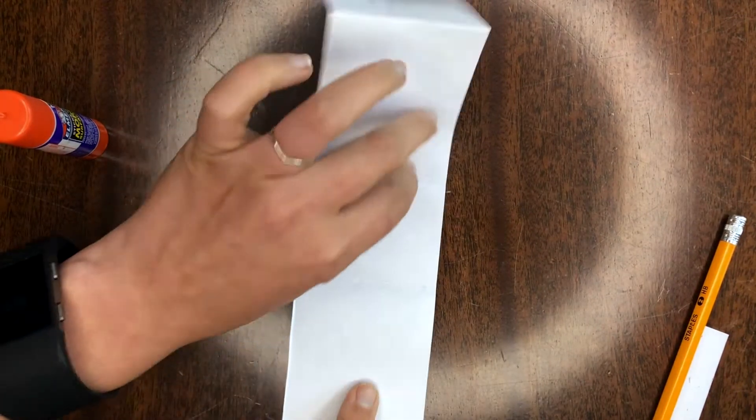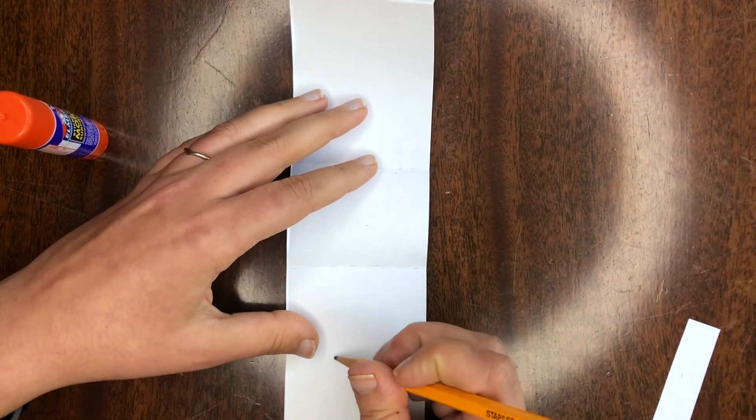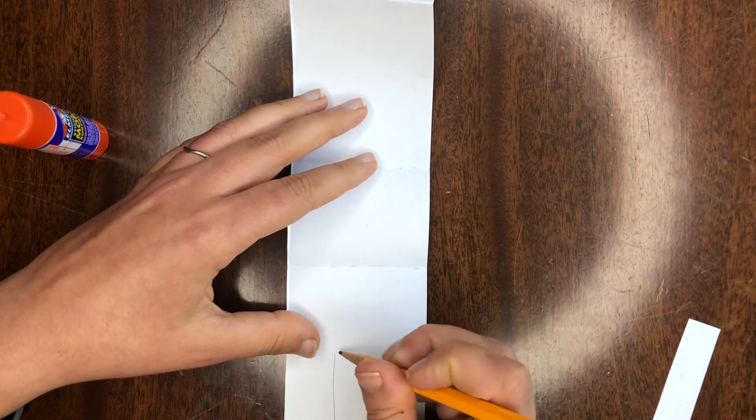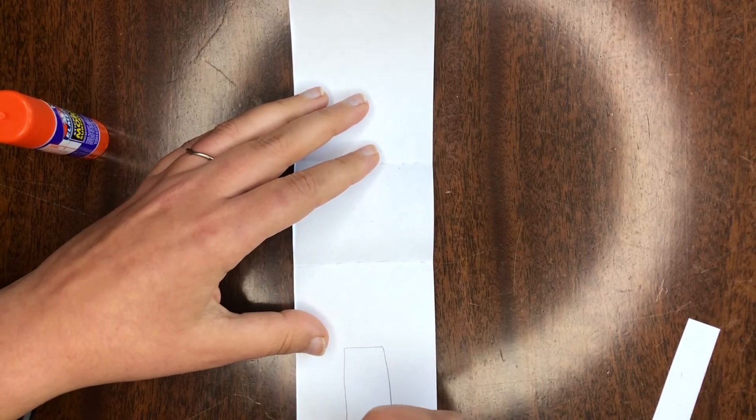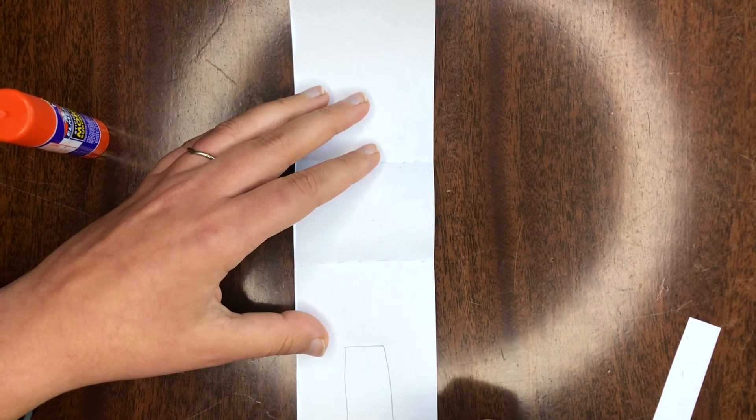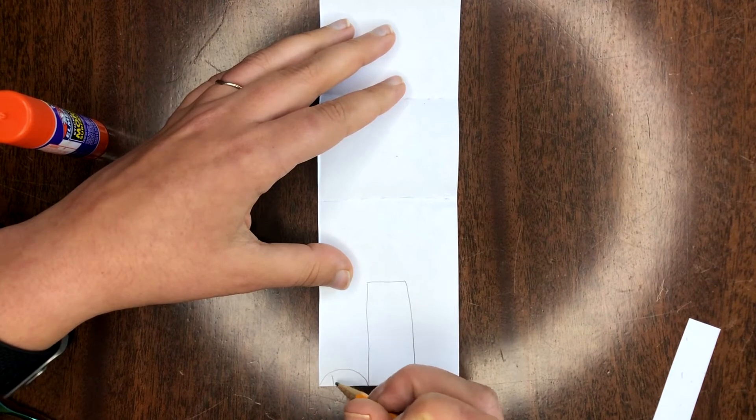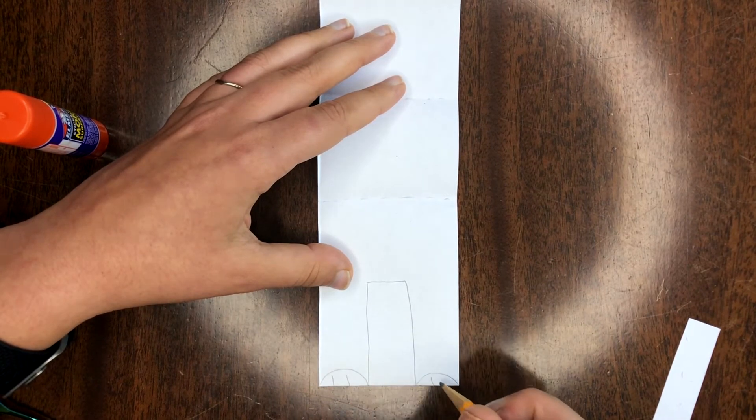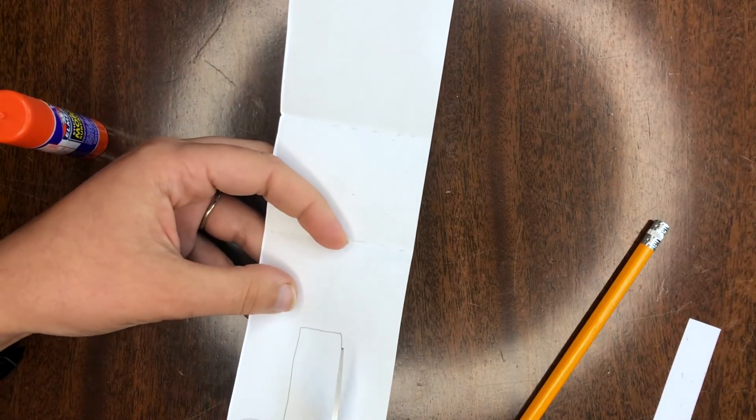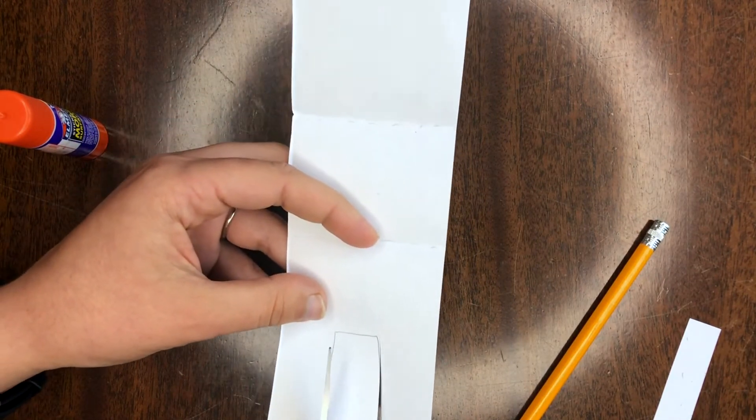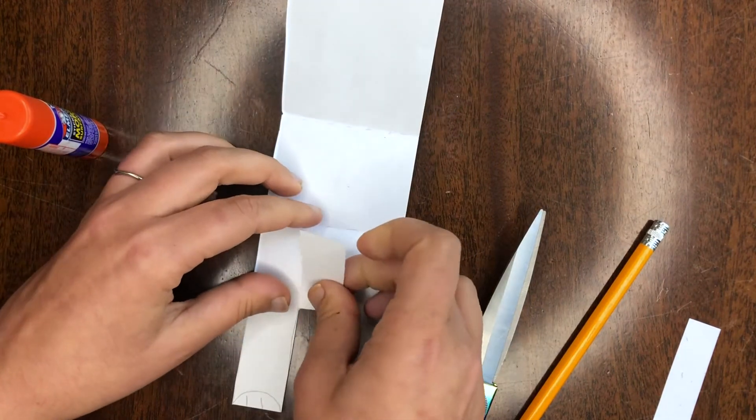This is the head. Back here we have our feet. So I'm gonna go ahead and draw in a rectangle. Add our little paws. And now I'm gonna cut on that rectangle. Don't cut it off. We're gonna fold it up.